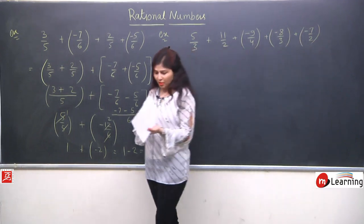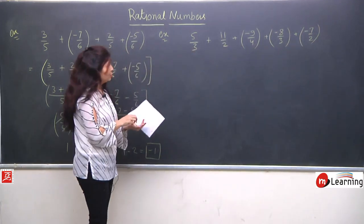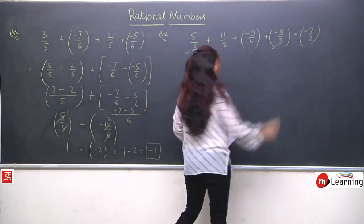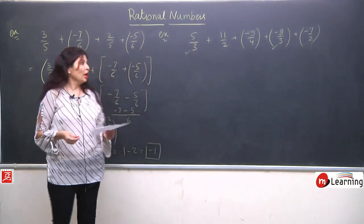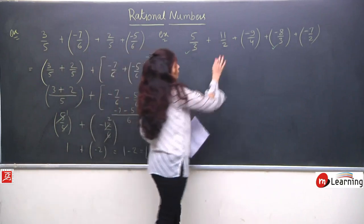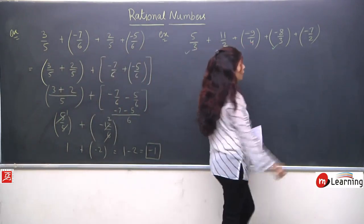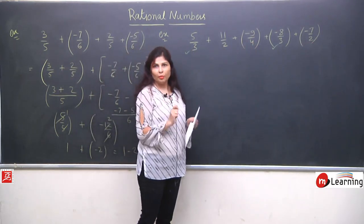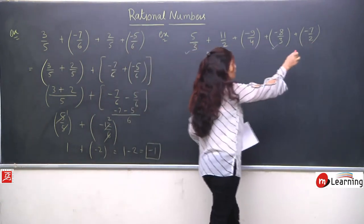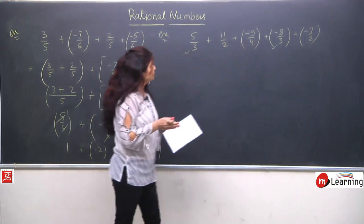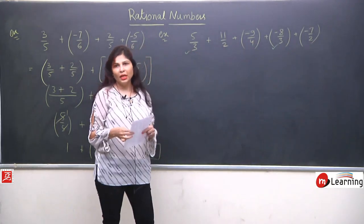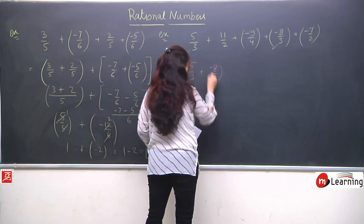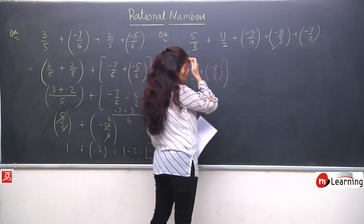Here there are 5 terms in the question. Again we will observe carefully — the like terms: 5/3 and -8/3 have denominator 3, so we collect those two. Then 11/2 and -7/2 have denominator 2, so we collect those. The last remaining term is -9/4. We collect: 5/3 + (-8/3), then 11/2 + (-7/2), and -9/4 separately.